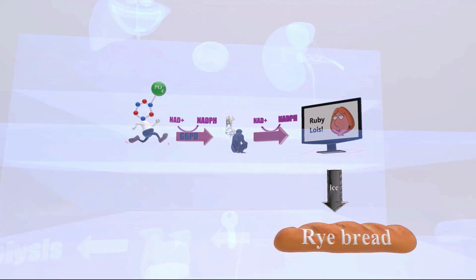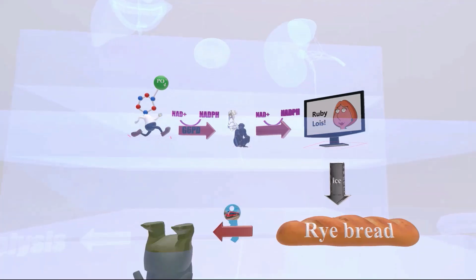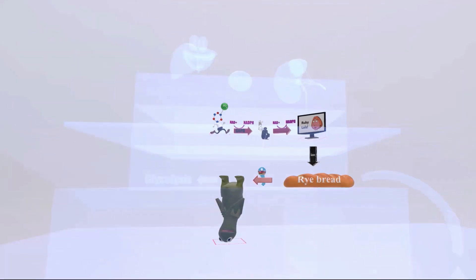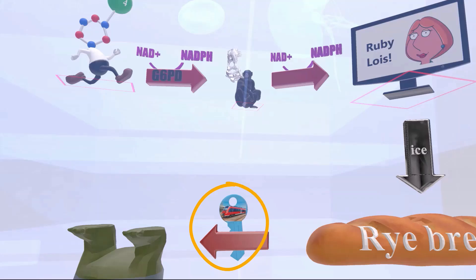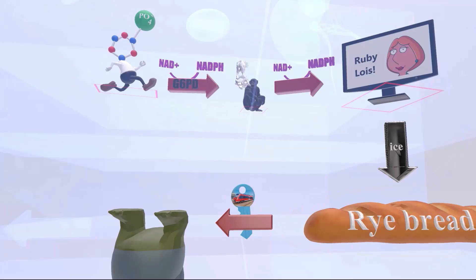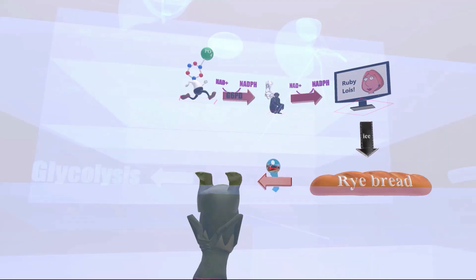Ribose-5-phosphate can be shunted back to glycolysis by being converted to fructose-6-phosphate, shown here as an upside-down frog with six toes — 'frog toe six' for fructose-6-phosphate. This conversion is carried out by the enzyme transketolase, represented by a key with a train on it — 'train key' for transketolase. There may also be another enzyme involved, transaldolase. Fructose-6-phosphate can then participate in glycolysis.